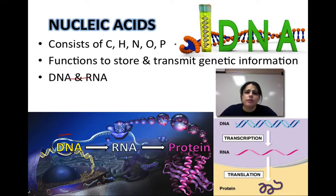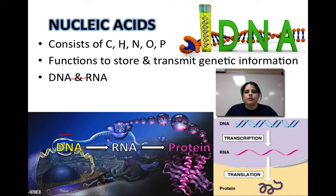The next one we're going to talk about are nucleic acids. Nucleic acids consist of everything except for sulfur — so carbon, hydrogen, nitrogen, oxygen, and phosphorus.